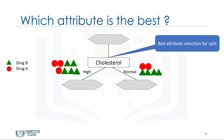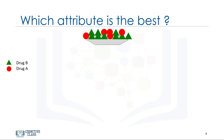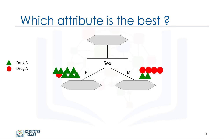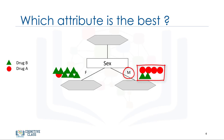So let's try another attribute. Again, we have our 14 cases. This time, we pick the sex attribute of patients. It will split our data into two branches: male and female. As you can see, if the patient is female, we can say drug B might be suitable for her with high certainty. But if the patient is male, we don't have sufficient evidence to determine if drug A or drug B is suitable. However, it is still a better choice compared to cholesterol because the results in the nodes are more pure.